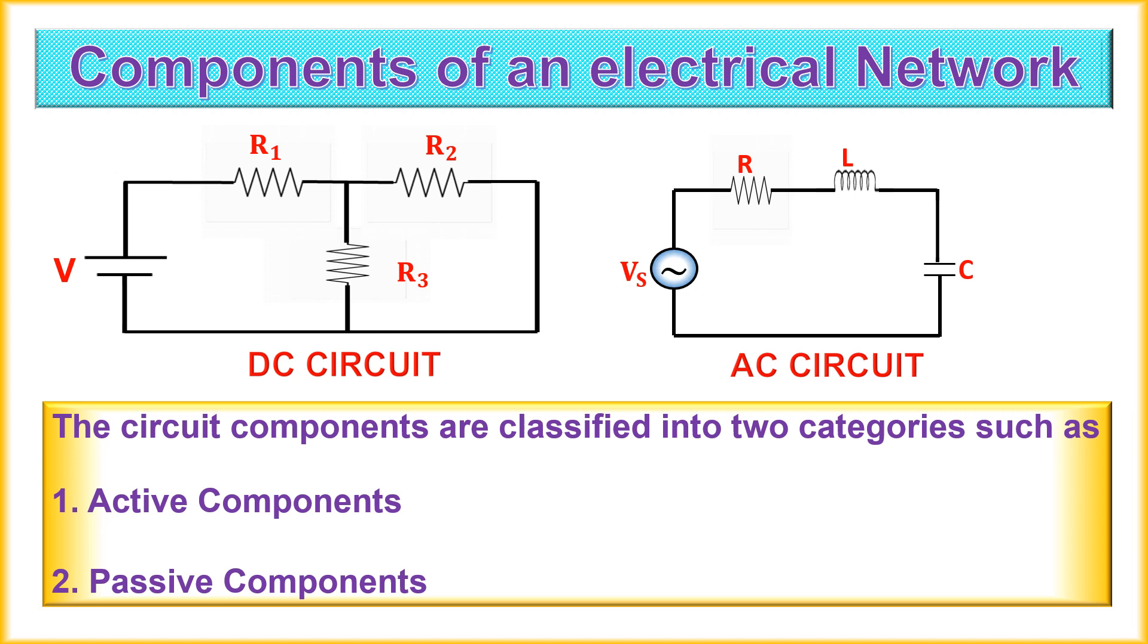The circuit components are classified into two categories namely active components and passive components. The five ideal basic circuit components are voltage sources, current sources, resistors, capacitors and inductors. The circuit components are also referred as circuit elements.